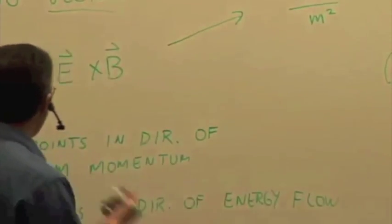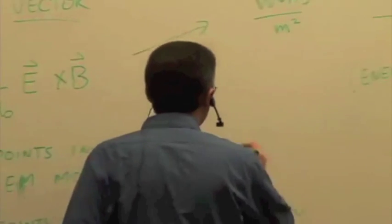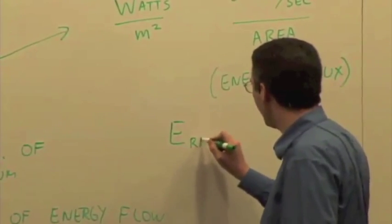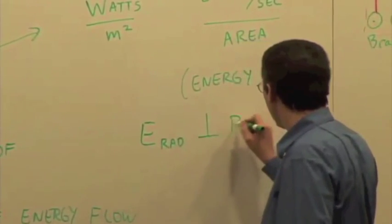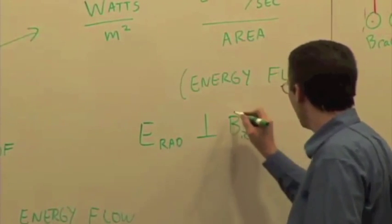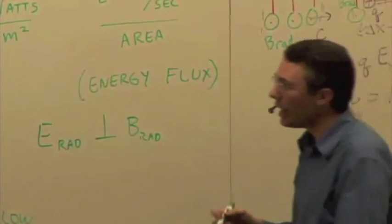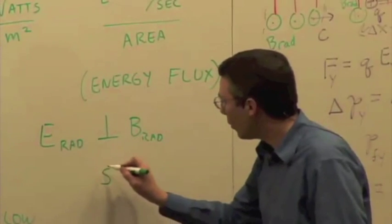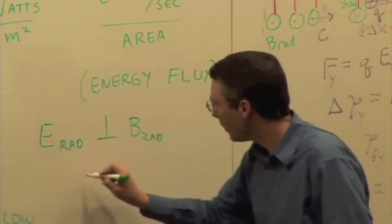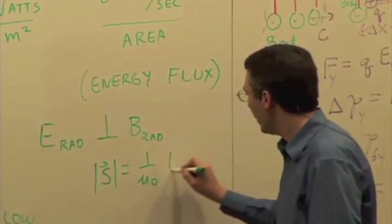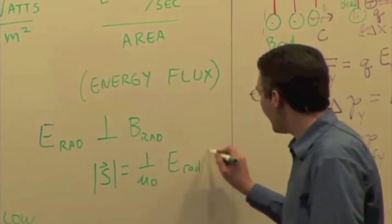And if you wanted to, you could even work this out for radiation because you could say that E for radiation and B are perpendicular. So if you plug this in, we know that the cross product is going to give us two vectors that are at an angle of 90 degrees.